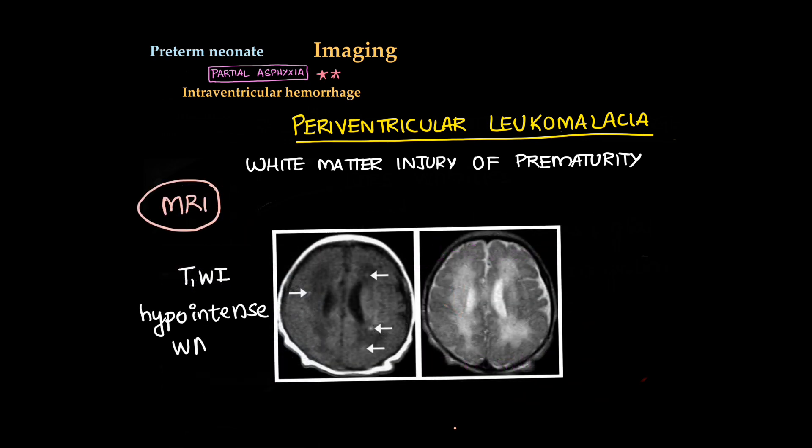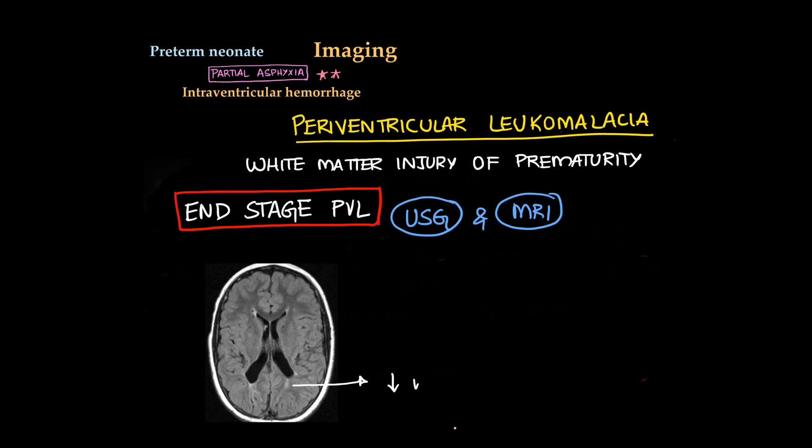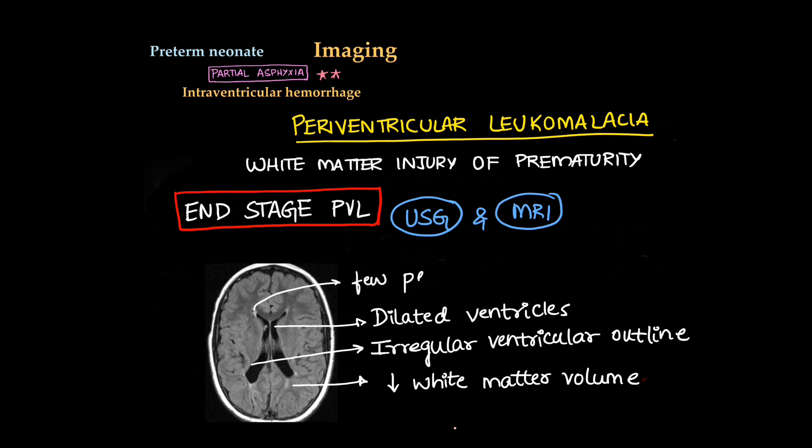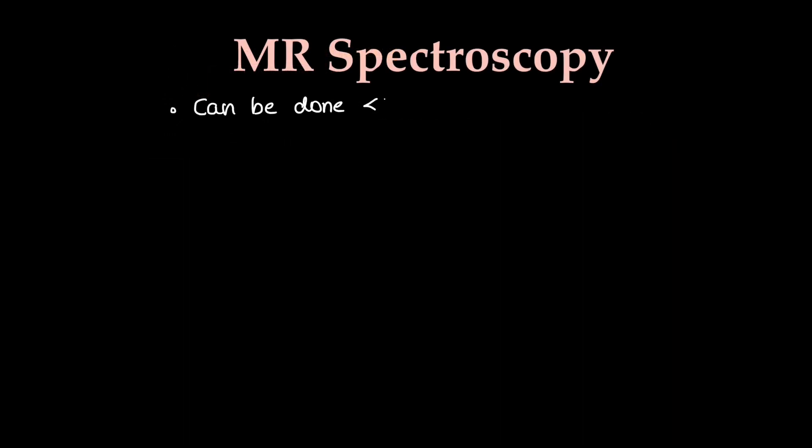On MRI, we can see T1 hypointensity in periventricular white matter. On T2-weighted, it appears hyperintense. What does end-stage periventricular leukomalacia mean? On ultrasound and MRI there are same findings. I will show on MRI. First, reduced white matter volume which can appear hyperintense. There are dilated ventricles, permanent dilatation, irregular outline of the ventricles. There can be some persistent cysts in periventricular areas. There can be atrophy of the brain matter also.